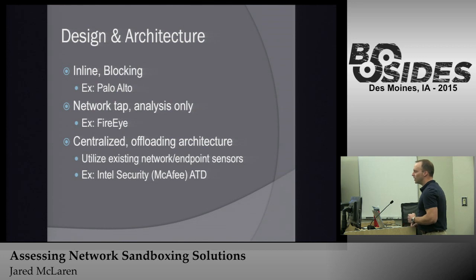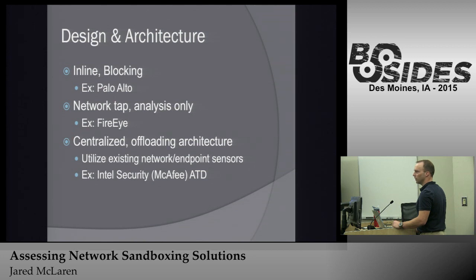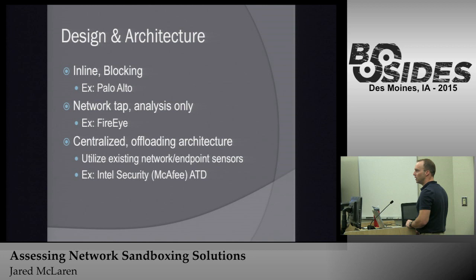As far as design and architecture goes, there are about three general styles. The first is inline blocking. Palo Alto is a perfect example — they've got their WildFire service, so they can look at malware coming in and out, they're right there inline, and they can block when they see certain things. It's pretty reactive, and they're dead in the network if they see anything bad coming through.